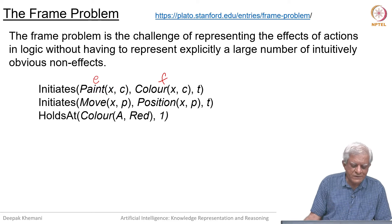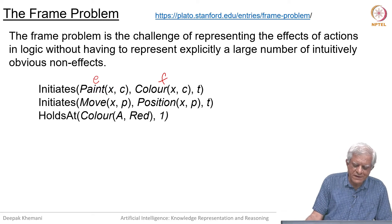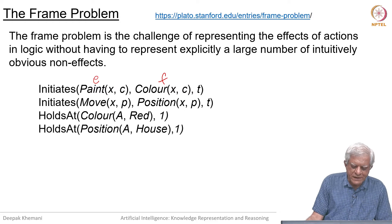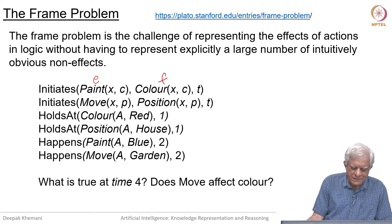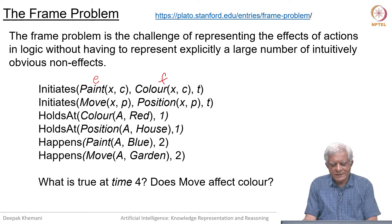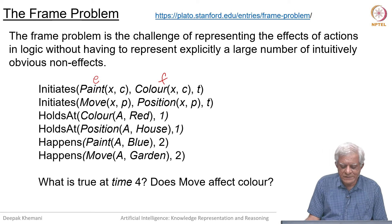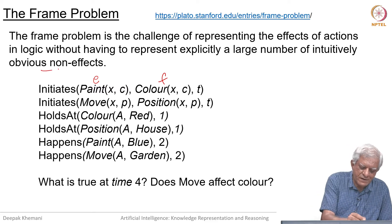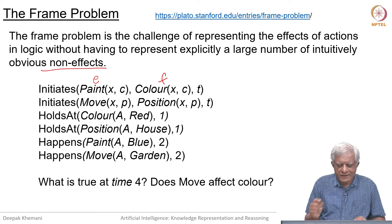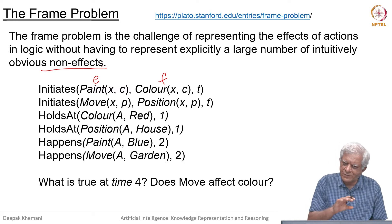This is sometimes called a narrative or the story: the color of a was red at time 1 and the position of a was in the house at time 1. Then at time 2 somebody painted a blue, and at time 2 somebody moved it to the garden. So what is true at time 4? Did moving the block somehow change its color? That is the kind of question the frame problem seeks to address — what are the non-effects, and how do we handle the fact that one thing does not affect another?